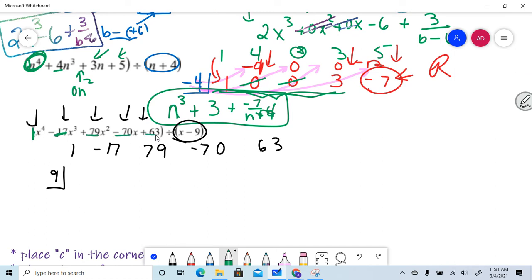And a 63. Please note, I'm not missing any terms. So I didn't have to put a zero like I had to do up here. Right? So ready? Drop it, run it. Then we drop it, and then we run it.